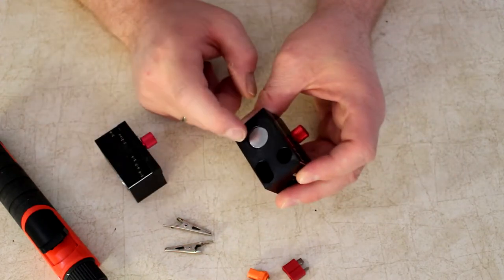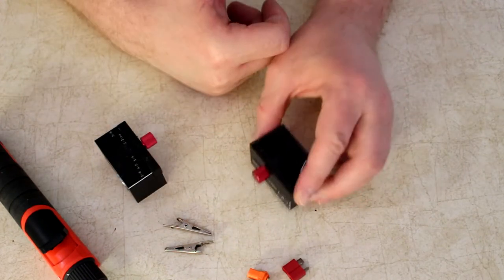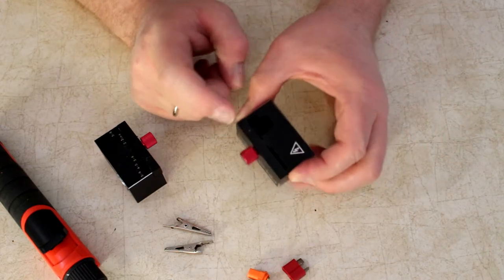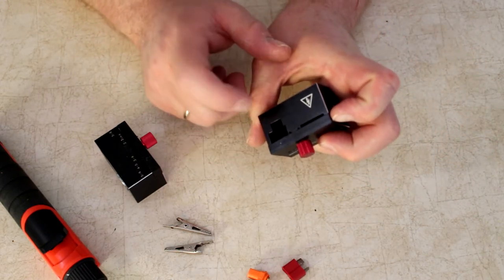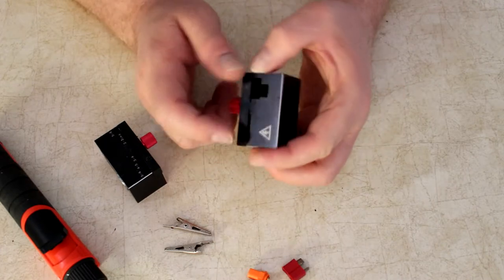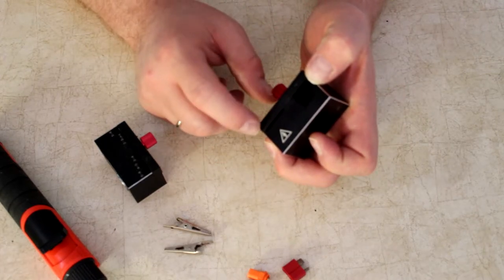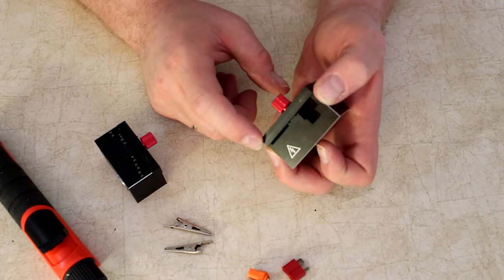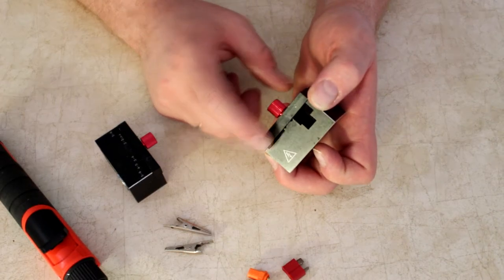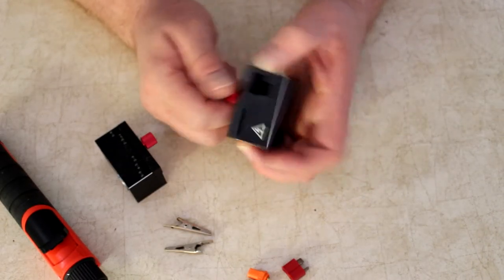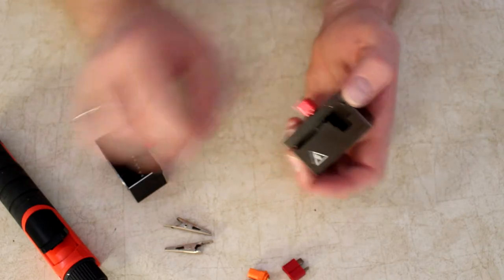But this guy here, the reason this magnet is recessed is because you're able to put on the side to be able to use your Deans, your XT60 and so on. And you have your flat spot here for your Traxxas or even any flat spade.